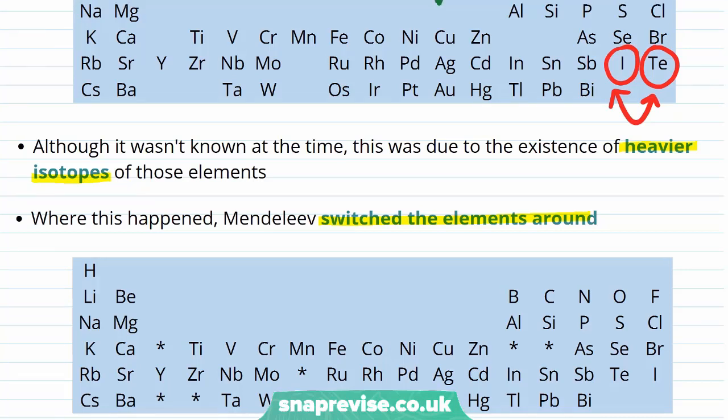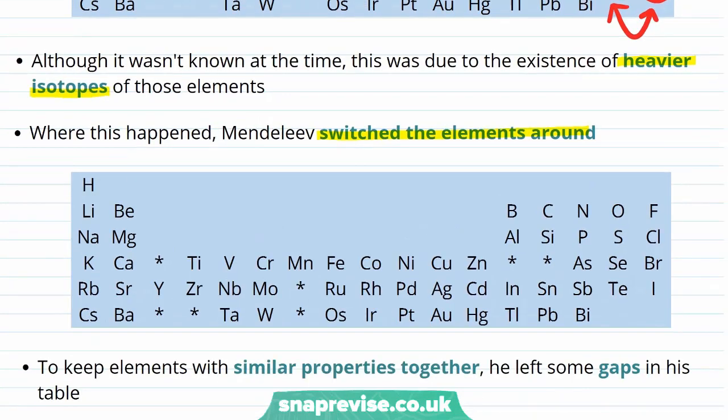Mendeleev realised that this ordering by chemical properties was the most useful feature of the table. And as we now know, these patterns of chemical properties can be explained by electronic configuration.